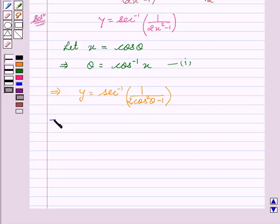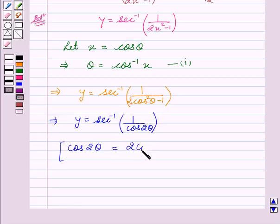This implies y equals secant inverse 1 over cos 2 theta. As we know that cos 2 theta equals 2 cos squared theta minus 1. So this implies y equals secant inverse secant 2 theta.